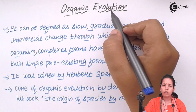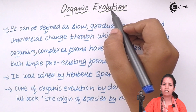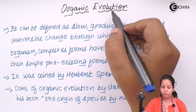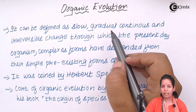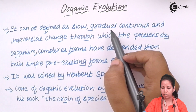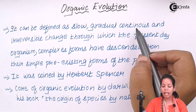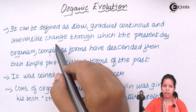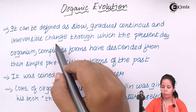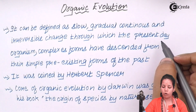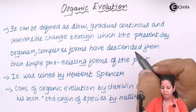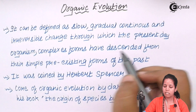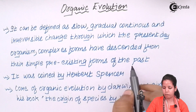Organic evolution can be defined as a slow, time-taking, gradual — meaning continuous — compulsory and irreversible change that cannot be reversed back to zero, through which present complex organisms, for example human beings, have descended from simple pre-existing forms of the past.